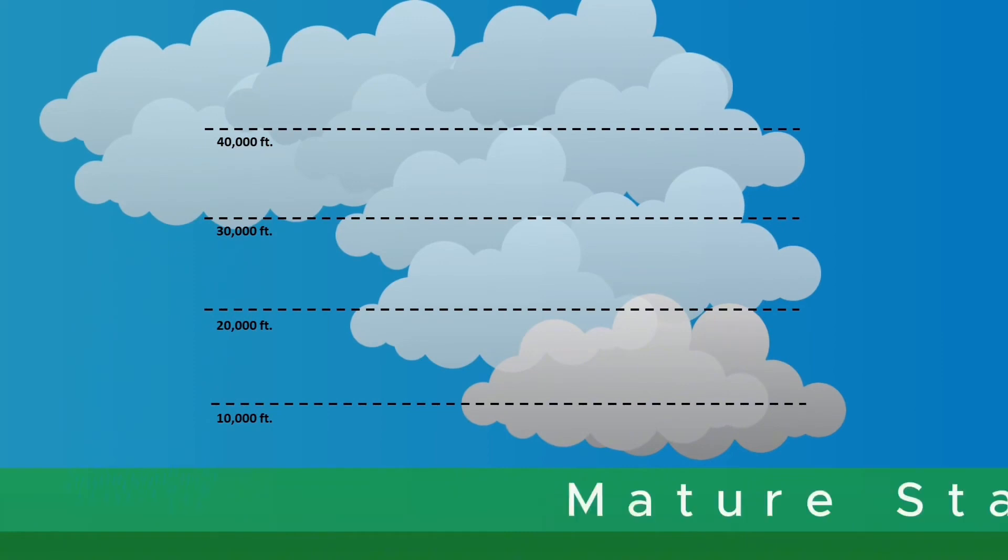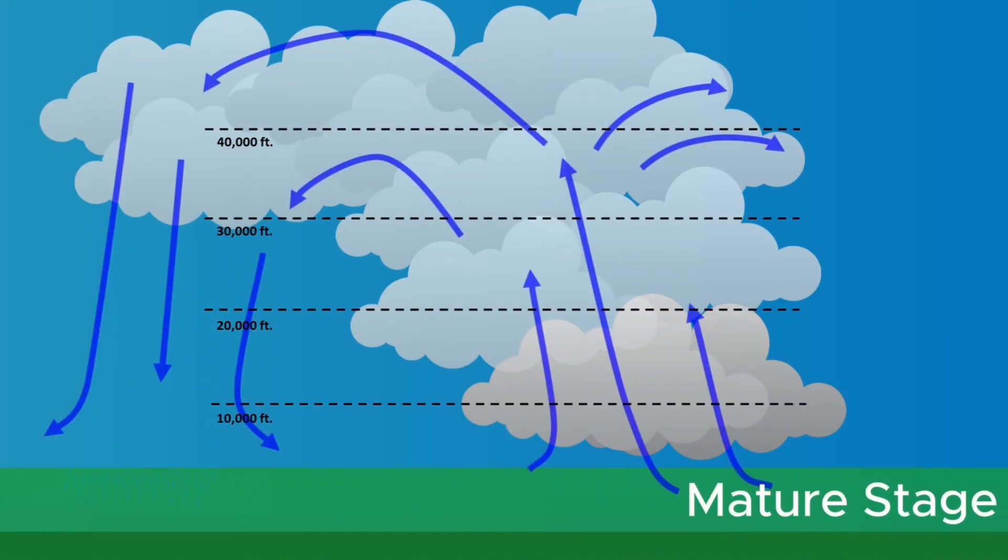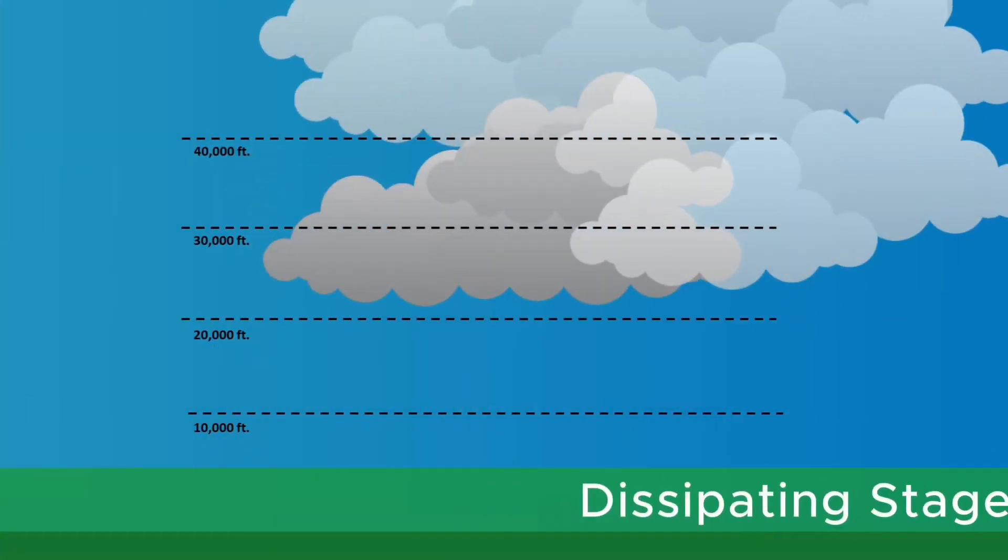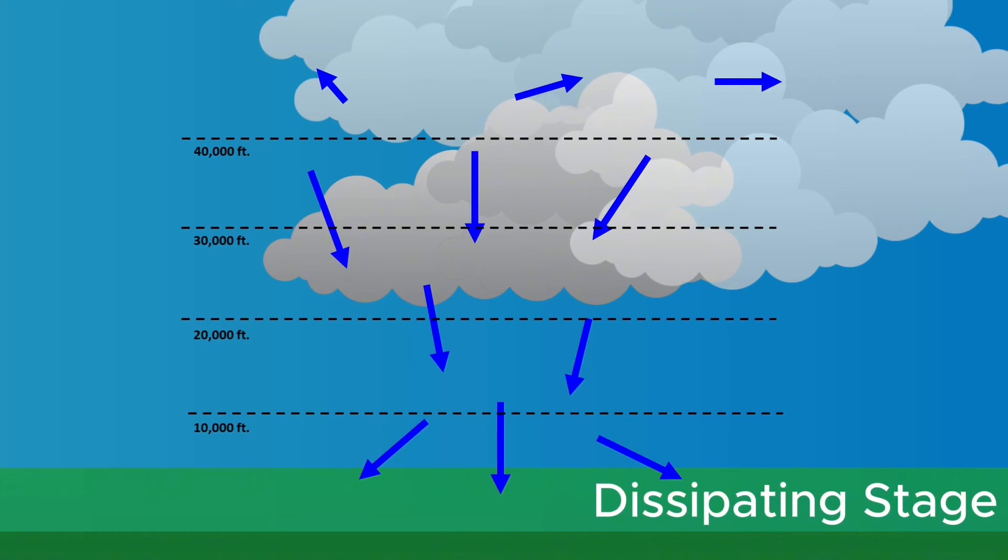Wind shear is found all around and directly below a thunderstorm. For example, in the mature stage of a thunderstorm you get wind shear created from the strong updrafts near the middle of the thunderstorm and downdrafts around it. In the dissipating stage, the energy of the thunderstorm scatters in all directions causing wind shear throughout the thunderstorm and vicinity.